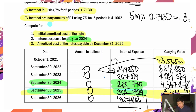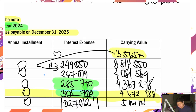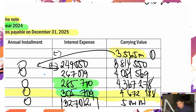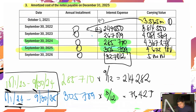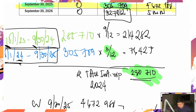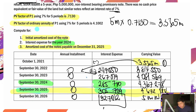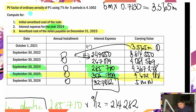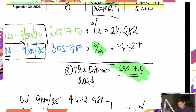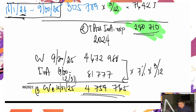So to summarize: number 1 — initial amortized cost: 3,565,000. Number 2 — interest expense for the year 2024. Number 3 — amortized cost of the notes payable on December 31, 2025.